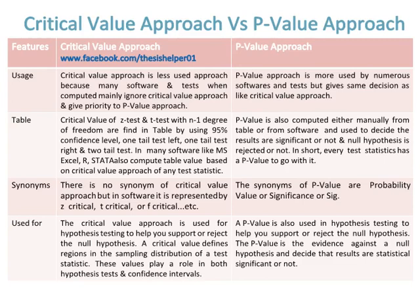Every test statistic has a p-value to go with it. There is no common synonym for the critical value approach, but in software it is represented as z-critical, t-critical, or f-critical. The synonyms of p-value are probability value, significance, or sig.